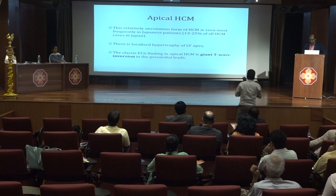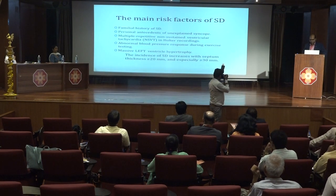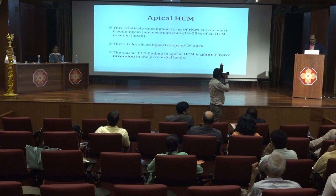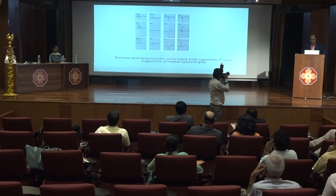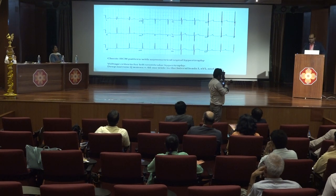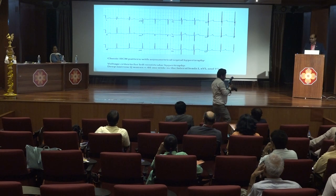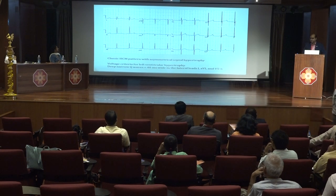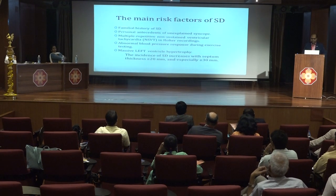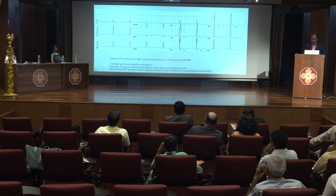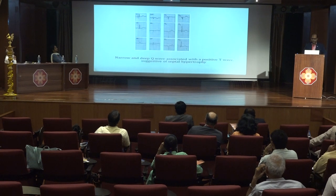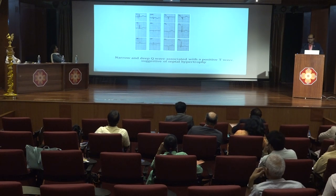The other commonly used criterion is the Cornell criteria. This is a classical ECG from a patient with asymmetrical septal hypertrophy showing deep negative Q waves in leads V5 and V6 and voltage criteria matching for LVH. It is important to note that narrow and deep Q waves associated with a positive T wave are a marker of the septal hypertrophy type of hypertrophic cardiomyopathy.